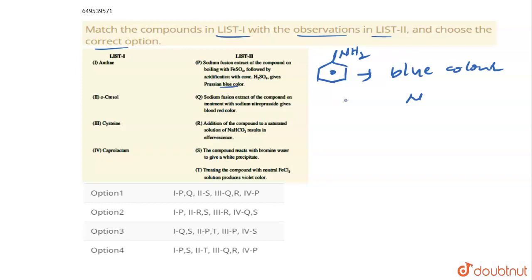So first one, P is the correct answer. And the compound reacts with bromine water, gives white precipitate. If it reacts with bromine water, it gives white precipitate also. So the first one is correct for both P and S. Aniline compound is correct for P and S.